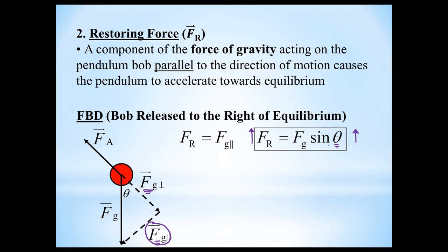Your minimum restoring force is when theta equals zero degrees, because sine of zero is zero. That occurs at the equilibrium position — when there's a zero degree angle relative to the vertical. Therefore, your restoring force is biggest when you're furthest from equilibrium (at the amplitude) and smallest when you pass through the equilibrium position.